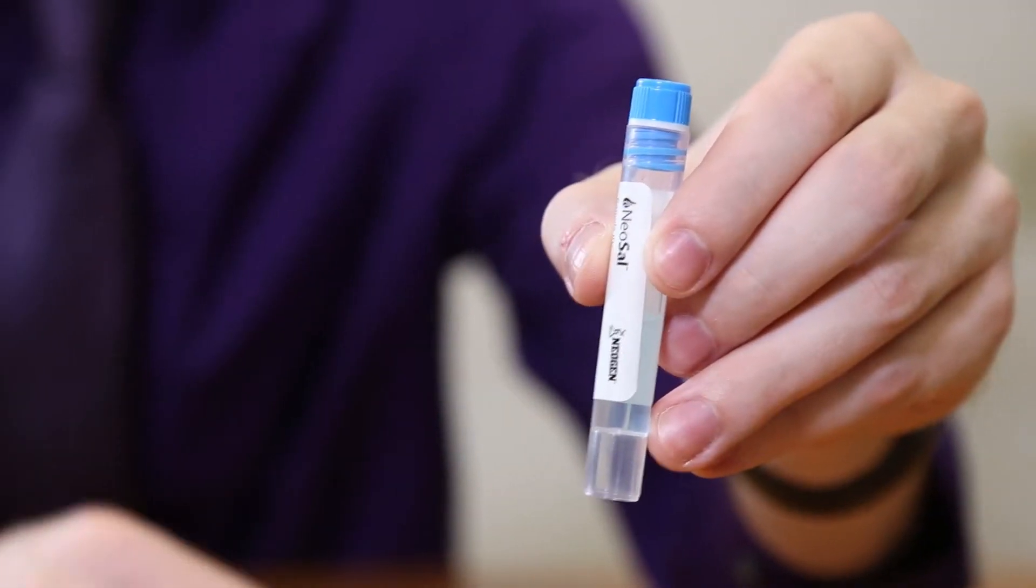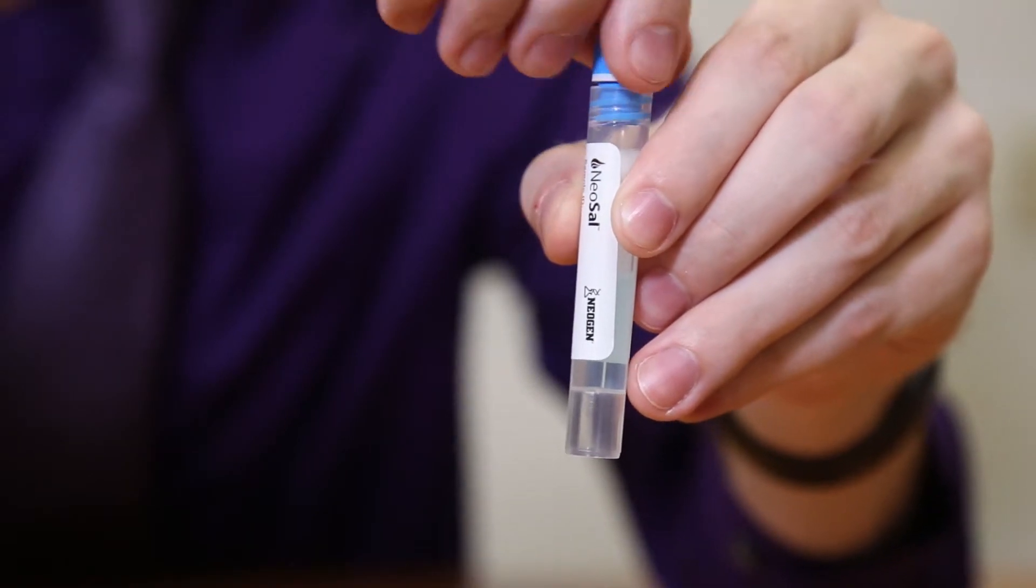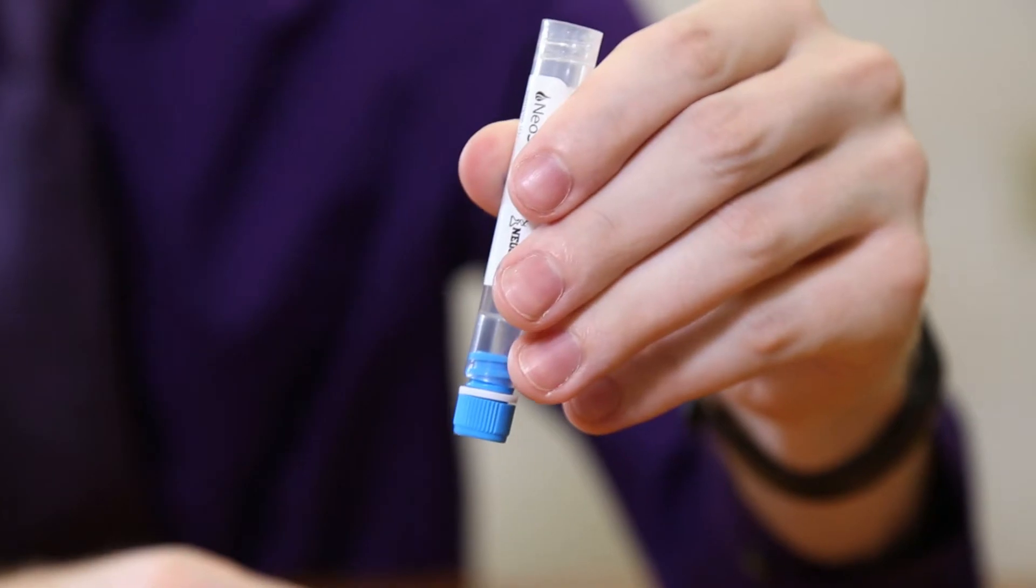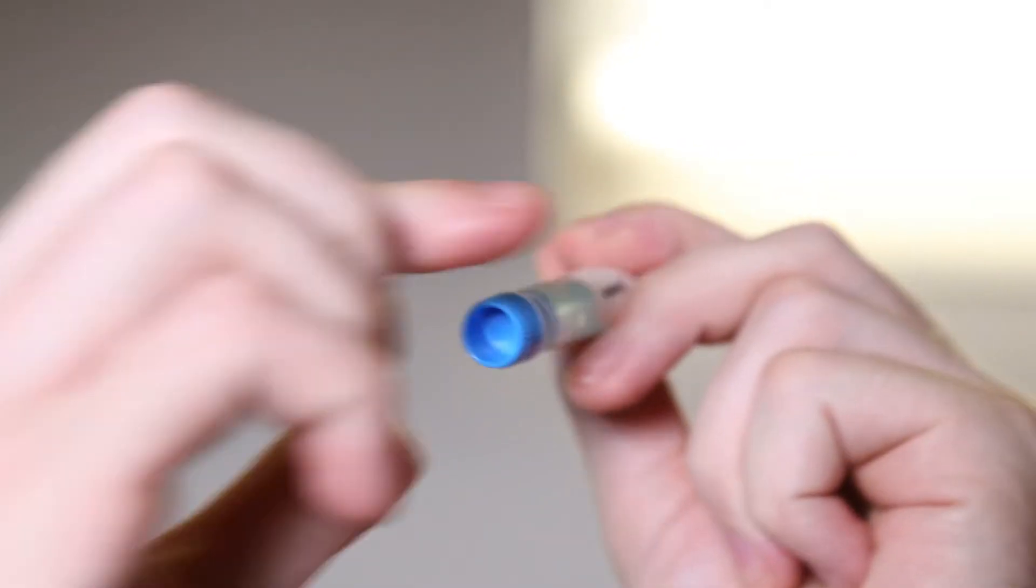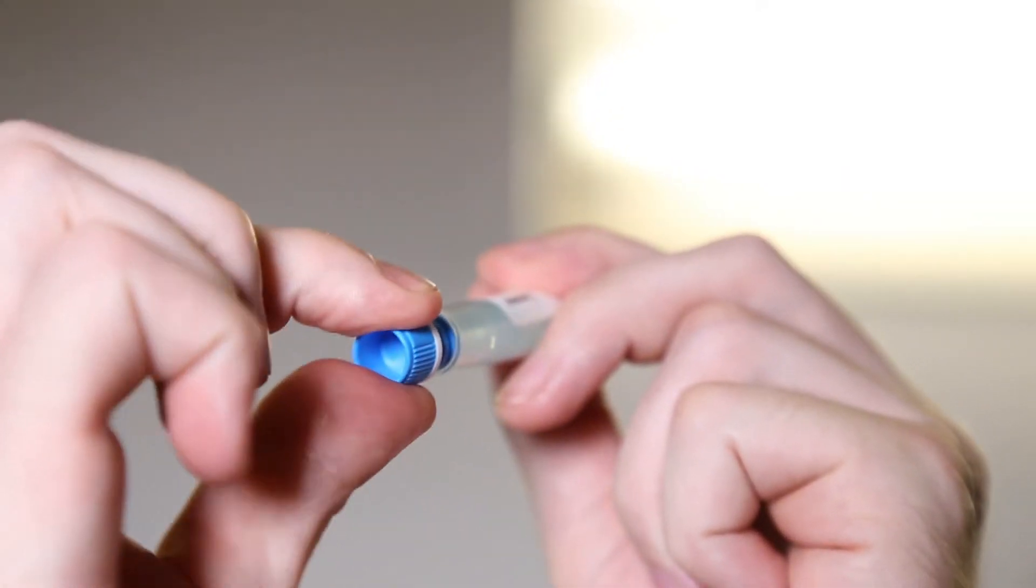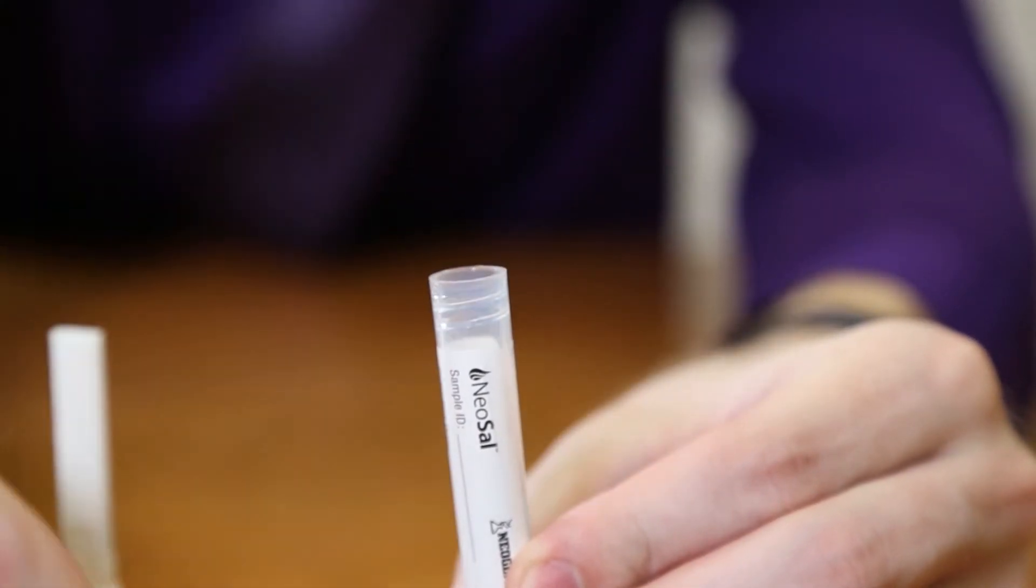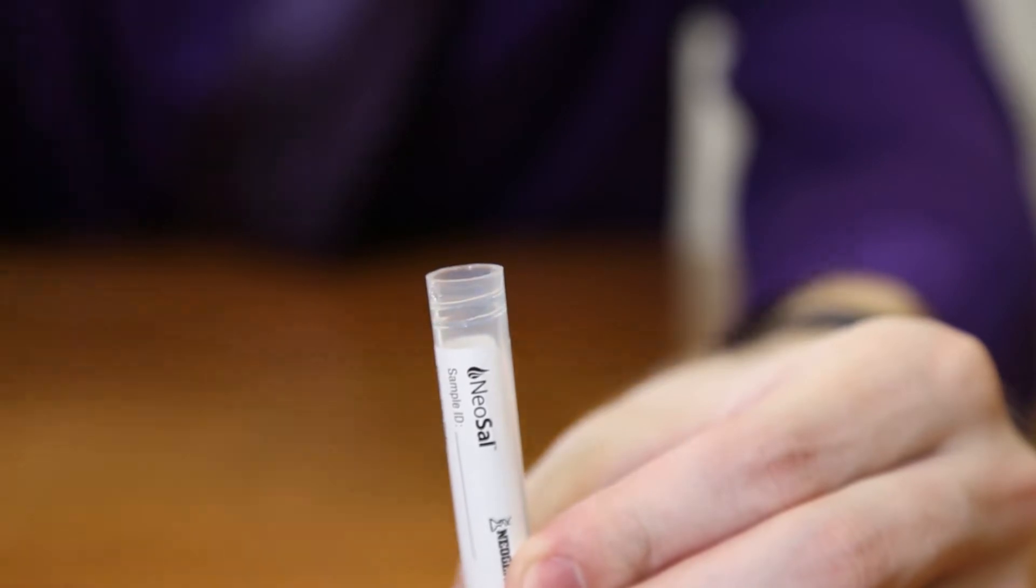The unique design of the buffer tube allows for easy removal of the cap and convenient storage of the cap in the bottom of the tube. This enables the laboratory to easily access the additional buffer tube cap when the sample arrives at the laboratory for processing. The buffer tube design also allows for tamper-proof tape to be used if required by your laboratory.